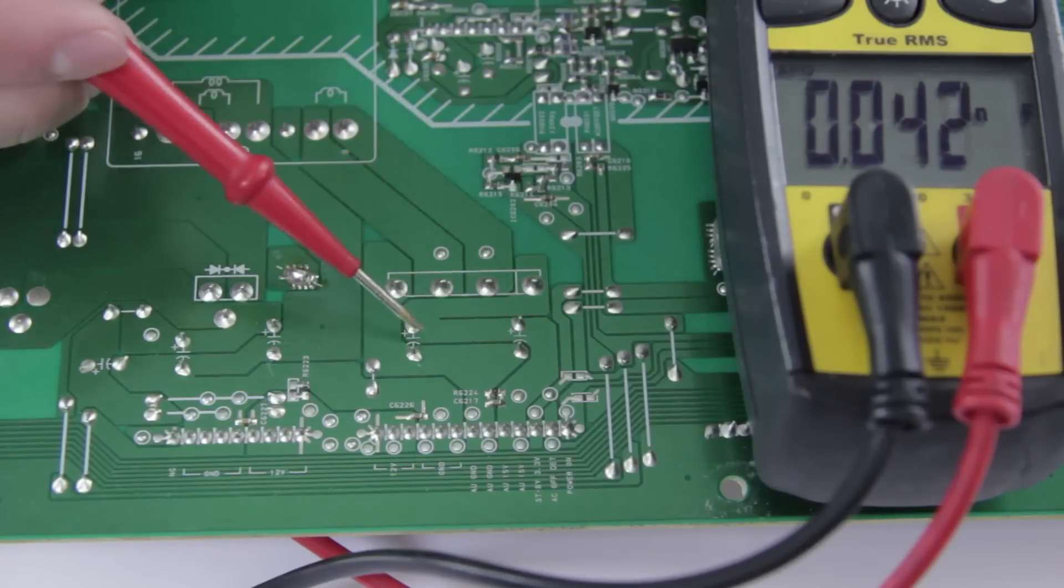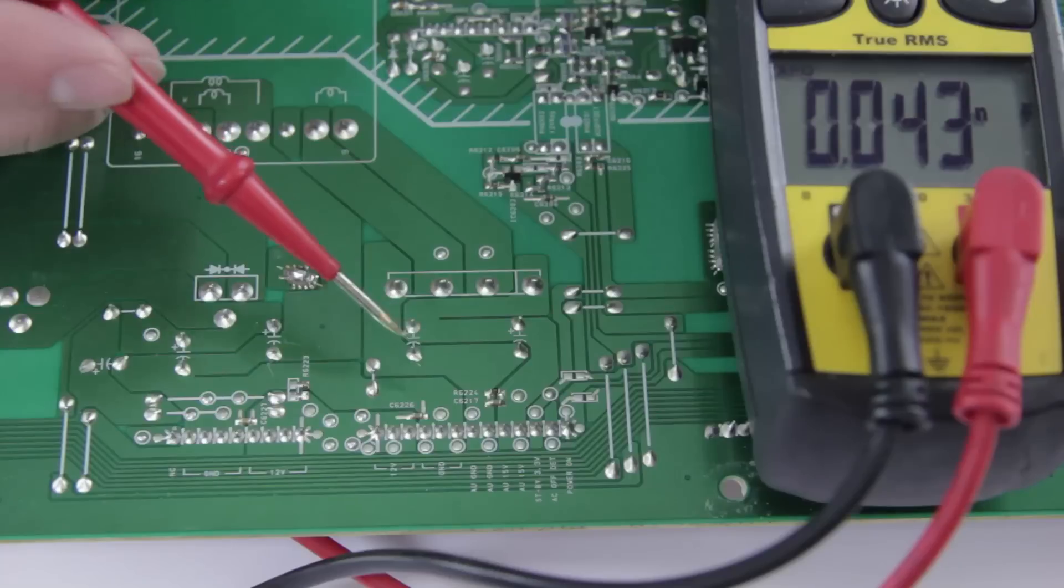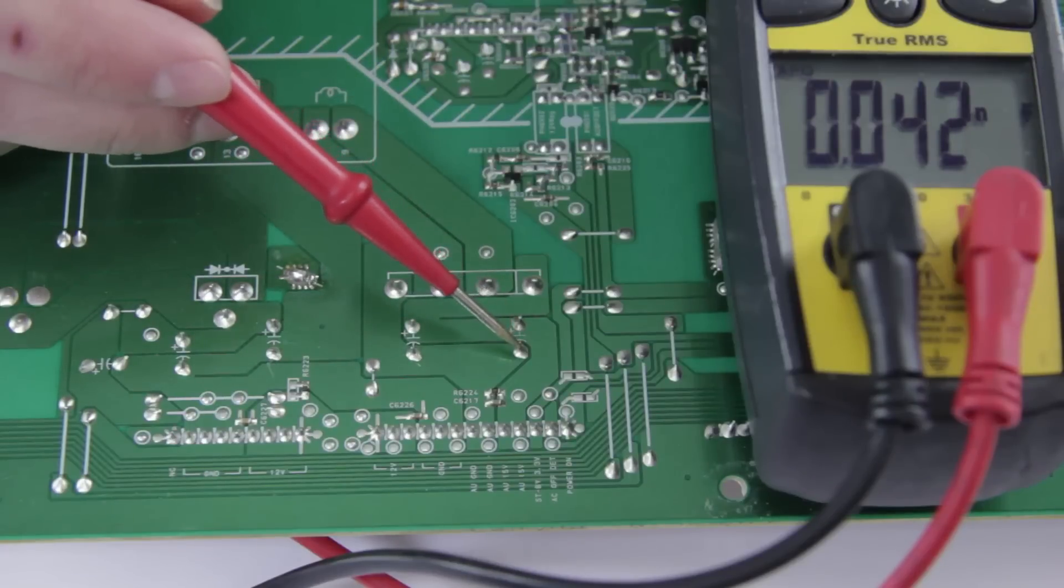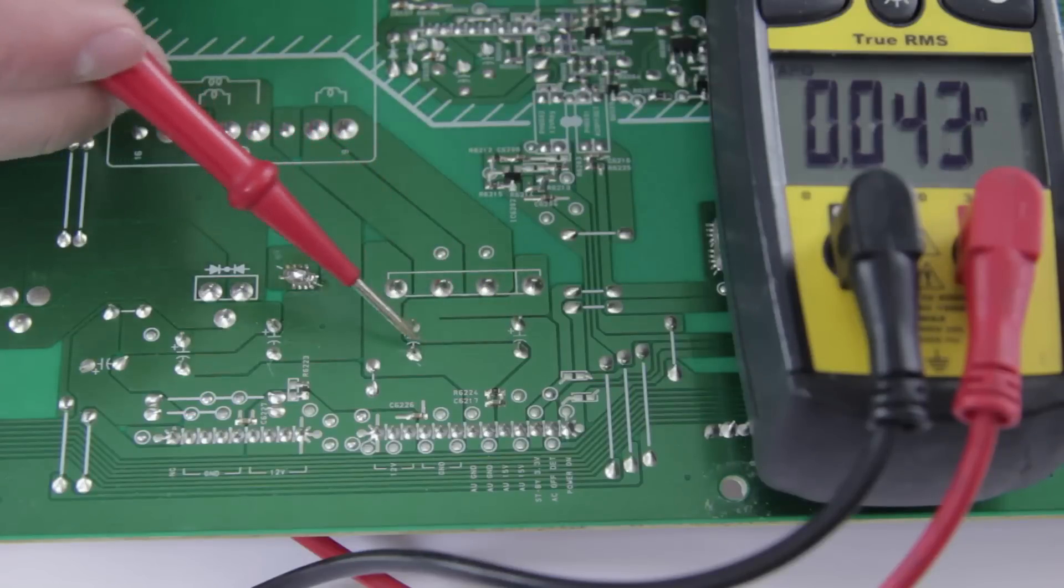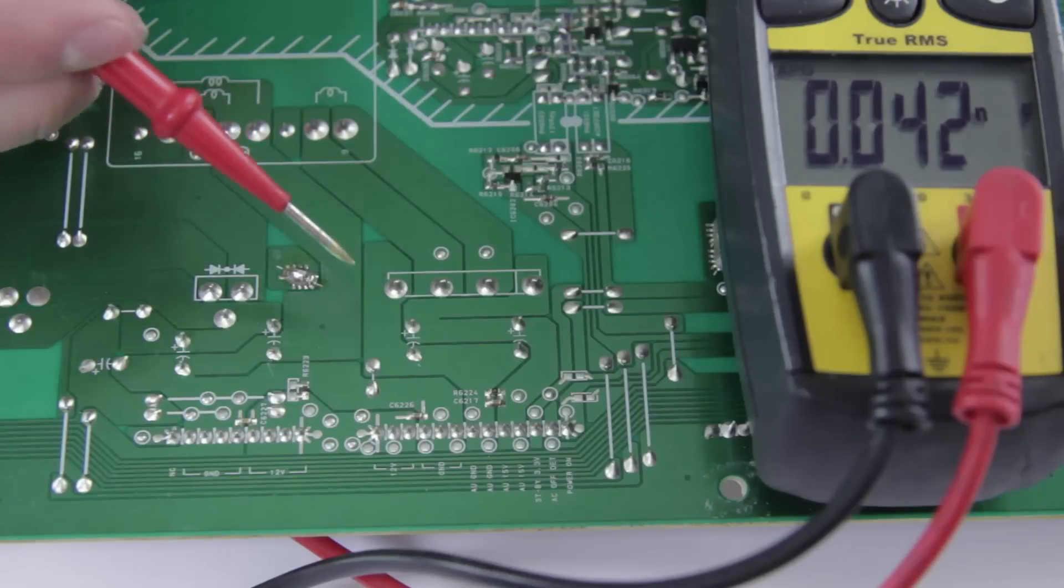The reason we're getting the wrong value is that we have these two caps in parallel. And unlike resistance, when you put caps in parallel they add together. So if you get a reading that you're not sure of, make sure that you check and see if there's any other capacitors on that same line that are together in parallel. Make sure you add the values together. And that should tell you if your reading is correct.